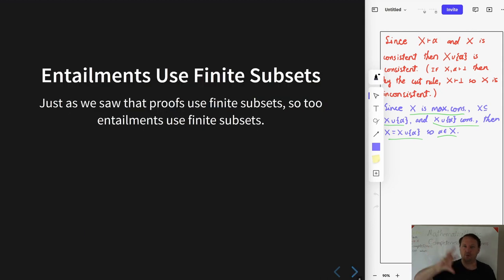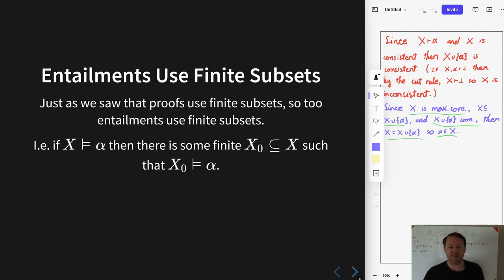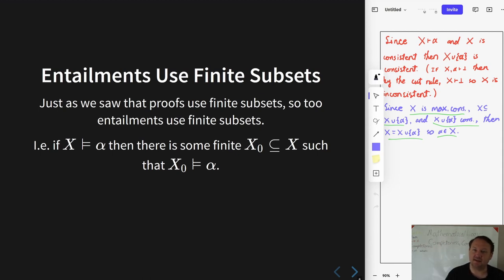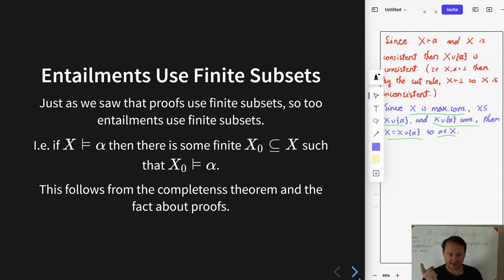We saw earlier that every proof uses a finite number of elements in the set — that is, there is a finite subset such that that finite subset also does the proof. We can now show the same thing holds for entailment: if x entails alpha, then there is some finite subset such that this finite subset does the entailment, and we go by way of completeness. If x entails alpha, then x proves alpha, then a finite subset proves alpha, then that finite subset entails alpha.